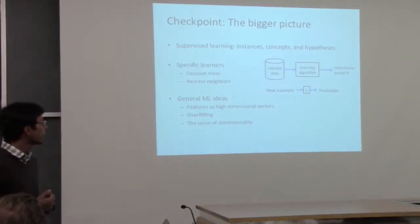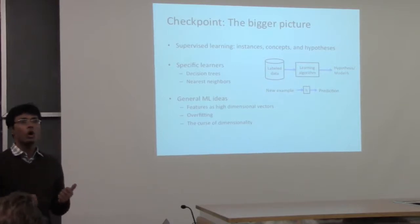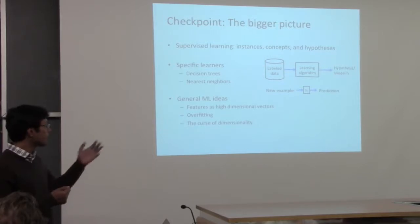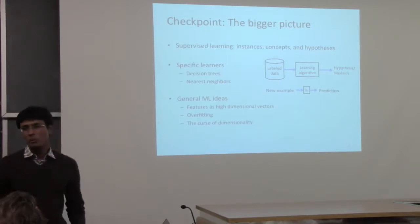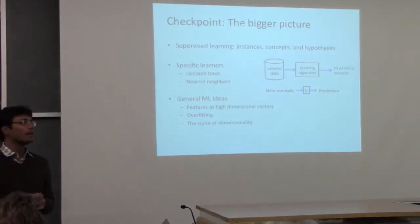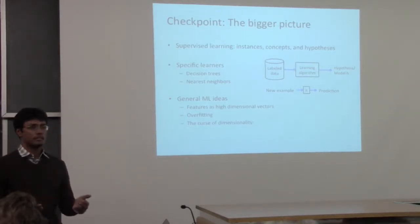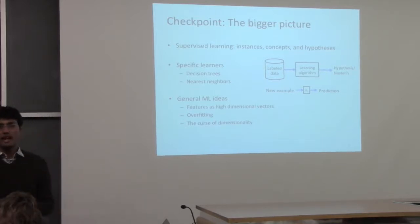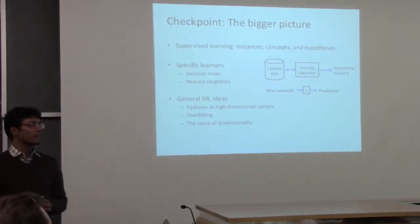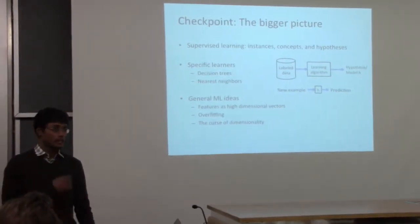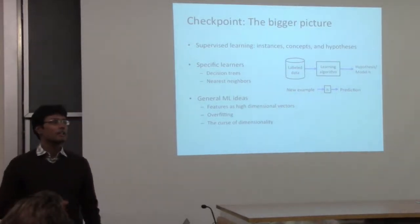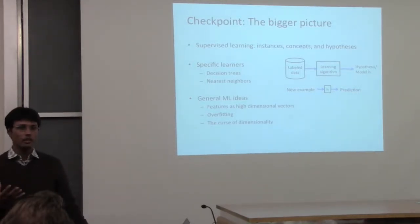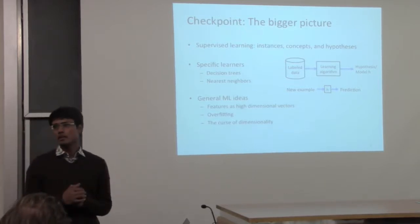Instances are represented by features, and the only interface these algorithms have to instances is through these features. We looked at the problem called overfitting, where in a very loose way you end up remembering the training set and never generalize. There is also the problem of the curse of dimensionality — high dimensional space is a very scary space, and distances don't behave the same way as in two or three dimensions.